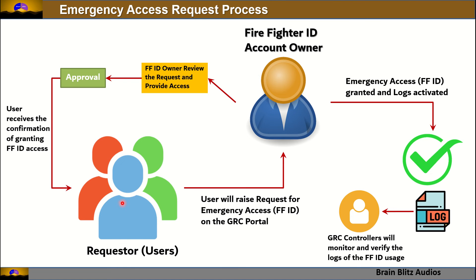In the EAM workflow, a user raises a request for emergency access or a firefighter ID on the GRC portal. The firefighter ID is owned by a particular person — the account owner reviews the request and provides access. Once approved, the requester receives confirmation of firefighter ID access. At the same time, logs are activated, allowing GRC controllers to monitor and verify the usage of the firefighter ID.